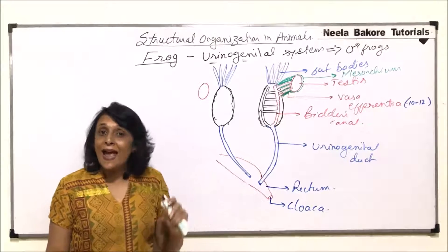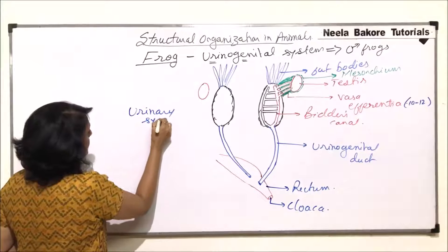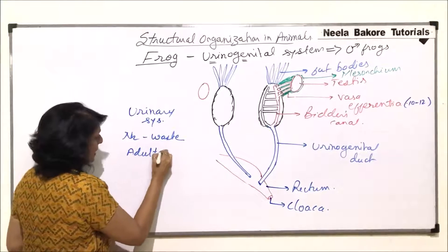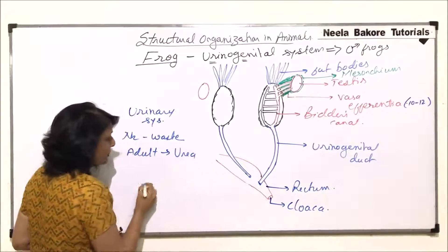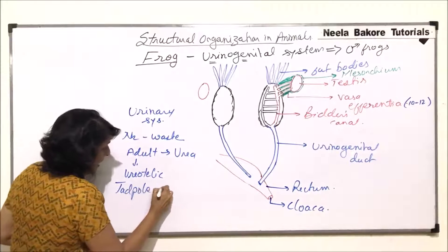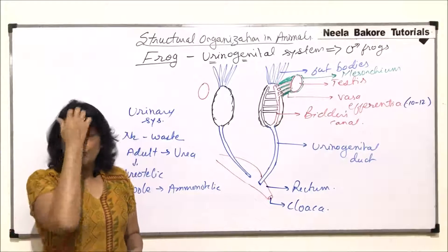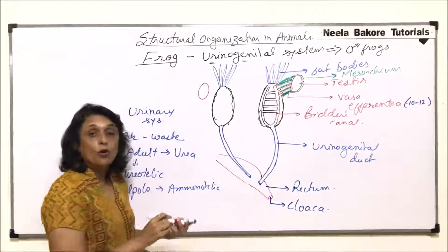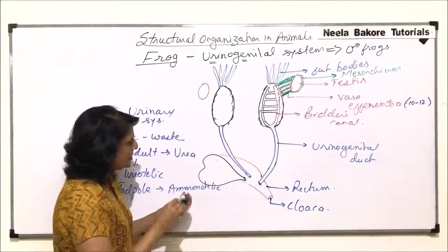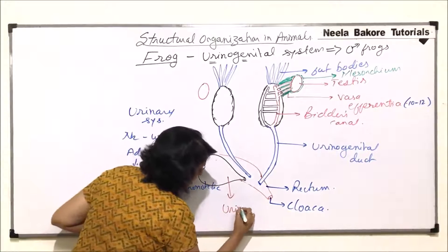Now regarding the urinary system: removal of nitrogenous waste in adult frogs is in the form of urea, meaning they are ureotelic. The larval stage, that is the tadpole, is ammonotelic. There is also a urinary bladder connected to the rectum which stores urine brought by these ducts.